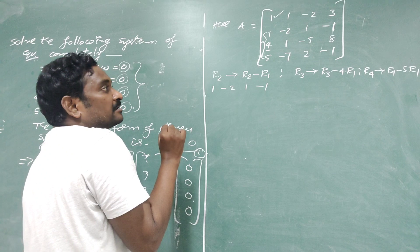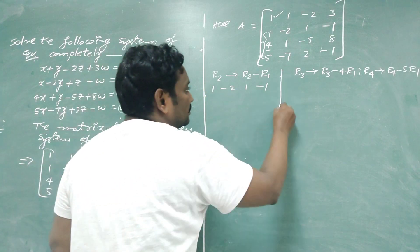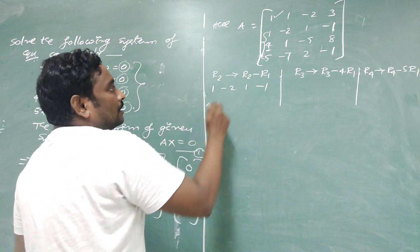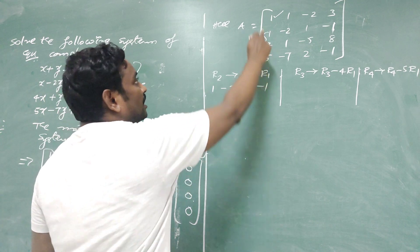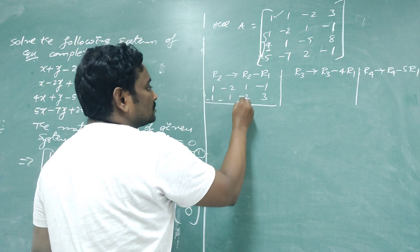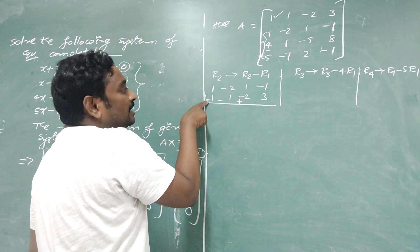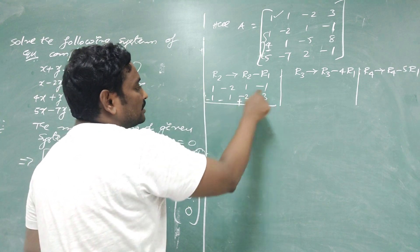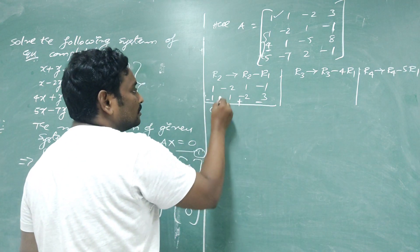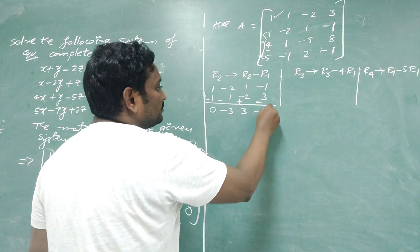To avoid numerical errors, it is best to write out the simplification before entering the matrix — this is the recommended method. When subtracting rows, change the signs of the elements being subtracted: minus becomes plus, plus becomes minus. Computing new R2 = R2 - R1 gives: 0, -3, 3, -4.